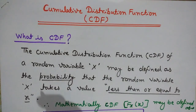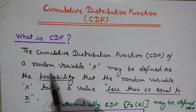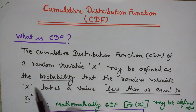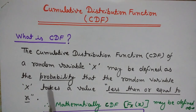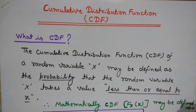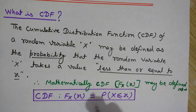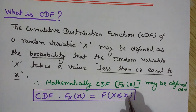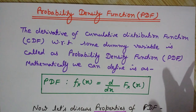The cumulative distribution function of a random variable X may be defined as the probability that the random variable X takes a value less than or equal to small x. Mathematically, the CDF is denoted as F_X(x), meaning the probability that random variable X is less than or equal to small x.